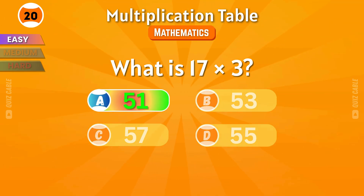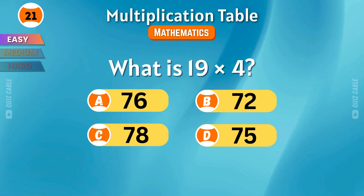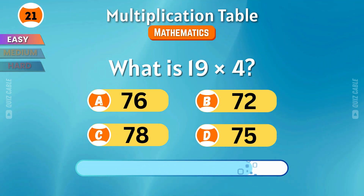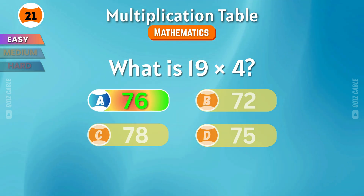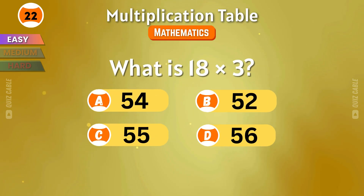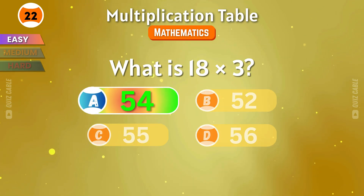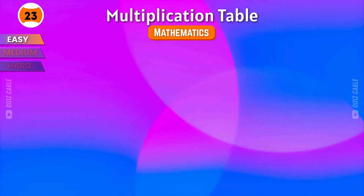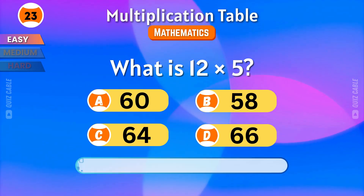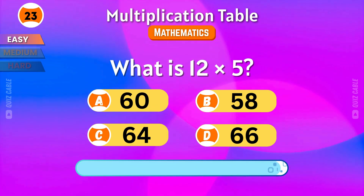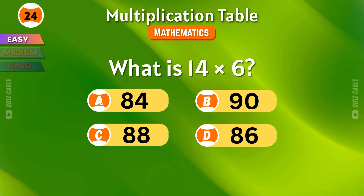The correct answer is 51. What is 19 times 4? That comes to 76. What is 18 times 3? That's 54. What is 12 times 5? It equals 60.